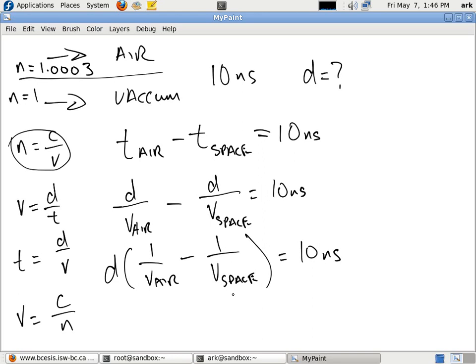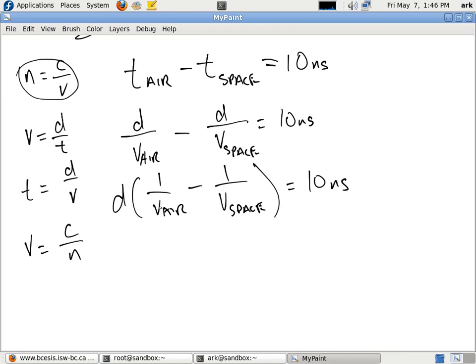And we have that's equal to 10 nanoseconds. Now, at this point, we can simply substitute in the velocity of each and say, 1 over c over n. Now, realize this is the reciprocal of the velocity of air, so we can simply reciprocate this as we're putting it in here. So, it's going to be n air over c minus,